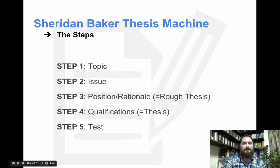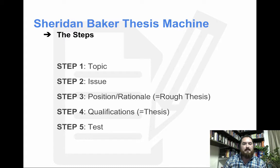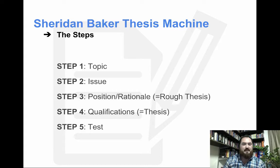Alright, so the first thing we're going to go through are the steps, and there are five basic steps on how to turn your topic into a thesis. Step one is stating the topic. Step two is stating the issue. Step three is stating a position or rationale, which basically creates a rough thesis statement. Step four is giving qualifications, which turns it into a real thesis, and then step five is testing whether or not your thesis is arguable on both sides.